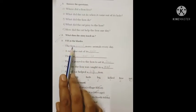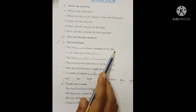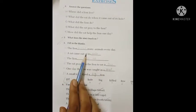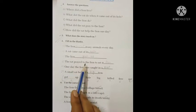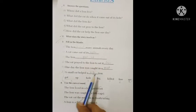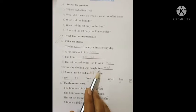the answers here. The lion killed many animals every day. A rat came out of its hole. The lion got up. The rat prayed to the lion to set it free. One day the lion was caught in a net.